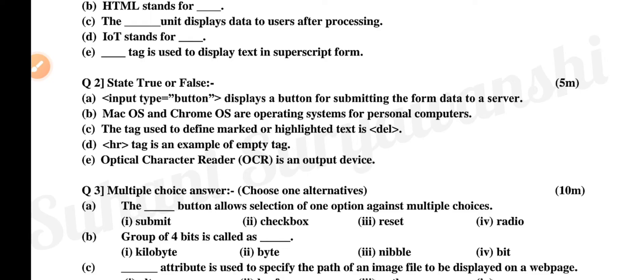So A aahe, input type button displays a button for submitting the form data to a server. Mac OS, Chrome OS are operating systems for personal computers. The tag used to define marked or highlighted text is del. D, HR tag is an example of empty tag. E, optical character reader, that is OCR, is an output device.